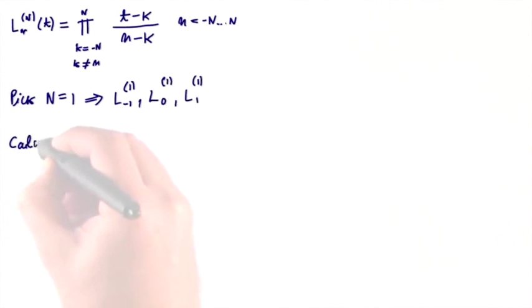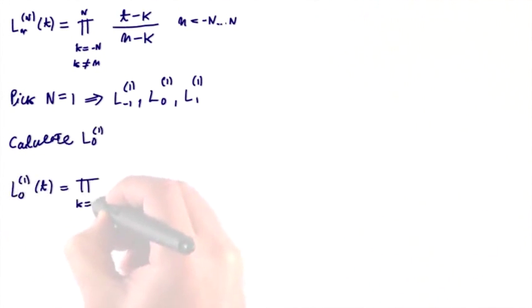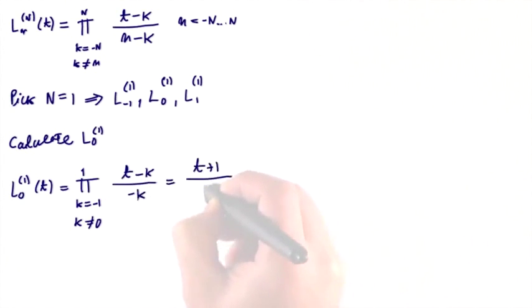Let us calculate l 0 of 1. So l 0 of 1 of t is this product where k cannot equal 0 of t minus k over minus k. This is equal to t plus 1 times t minus 1 divided by minus 1, so that's 1 minus t squared.